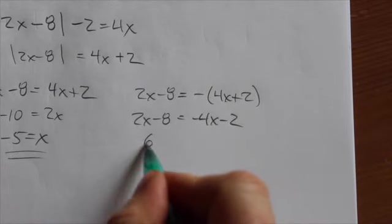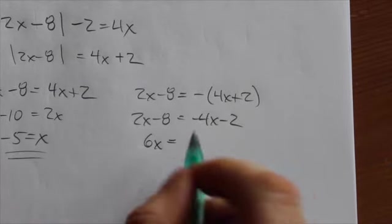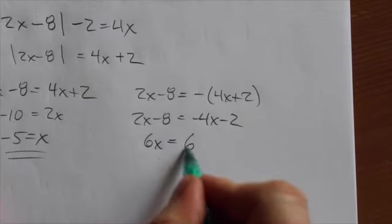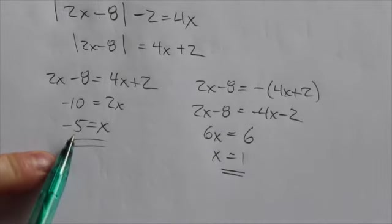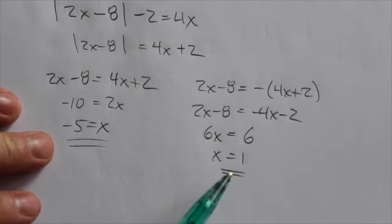Let's maybe bring the 4x term over. We'll get 6x when we bring it over to the other side here, and then bring the 8 over. It is equal to 6. So x is equal to 1. So here are our two solutions here. Either x is equal to negative 5 or x is equal to positive 1.